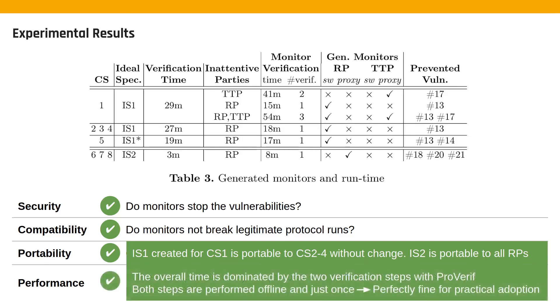The runtime of Bulwark is dominated by the two verification steps. However, these steps never require more than 90 minutes, and they are executed offline and just once. So these steps are perfectly fine for practical adoption.